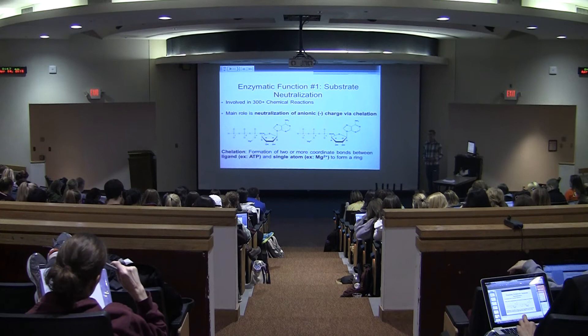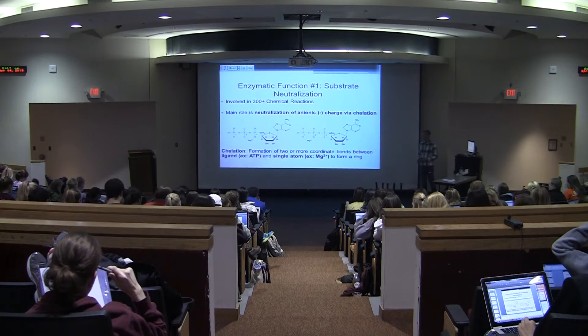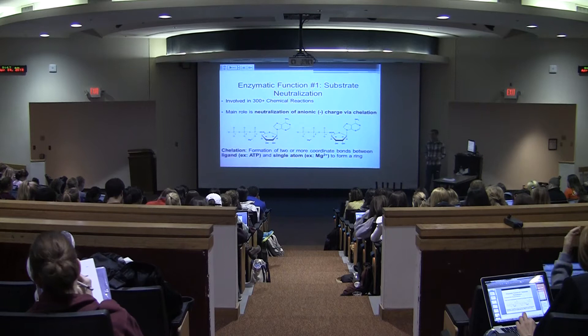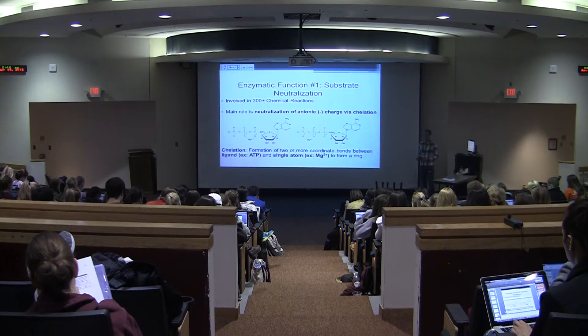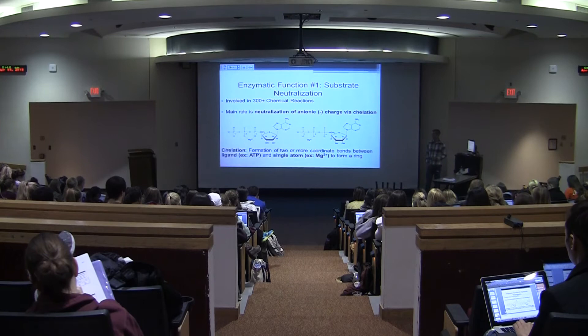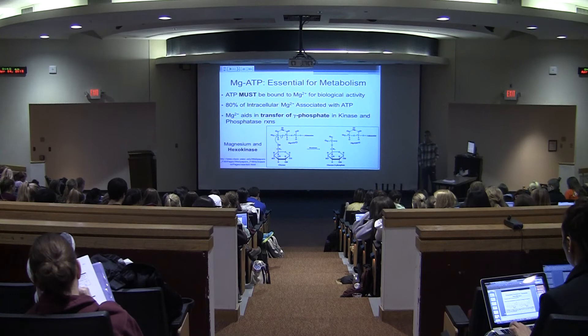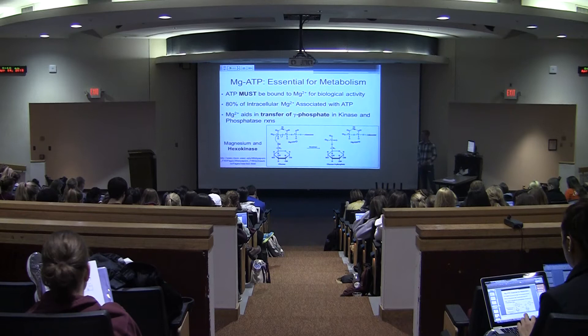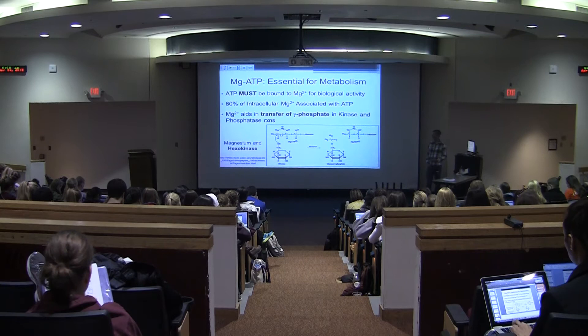Chelation is the formation of two or more coordinate covalent bonds between a ligand such as ATP and a single atom, which is magnesium, forming a ring structure. This ring structure formation alters both the charge and the structure of the substrate, which has important effects on enzyme structure and function. ATP must be bound to magnesium for biological activity — that's something important to remember.